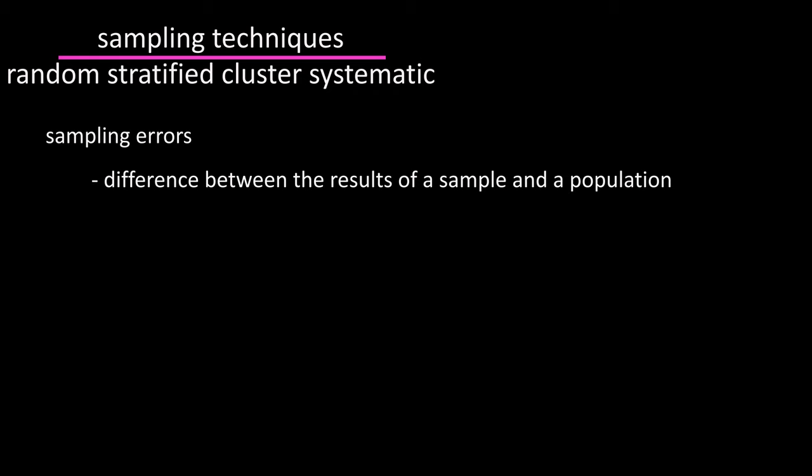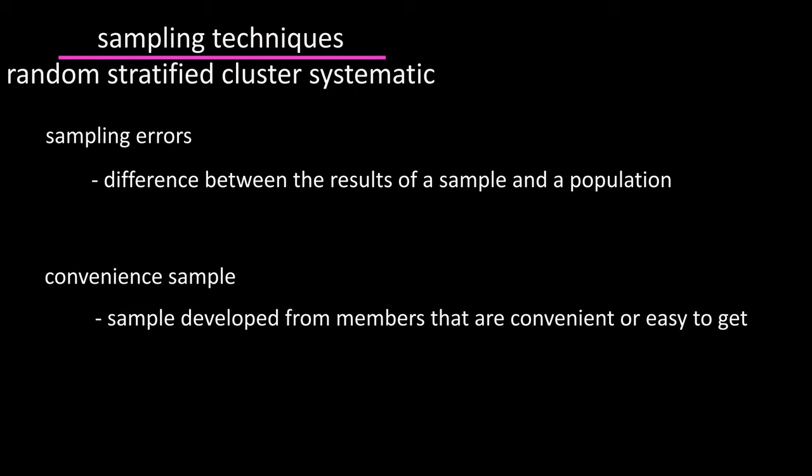And there is one other sampling method called a convenience sample, where a researcher develops a sample from members of the population that are easy to get or convenient. Many times these samples lead to biased results.